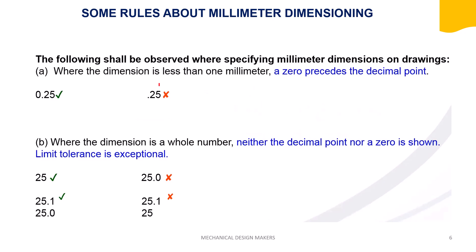The first rule: when the dimension is less than one millimeter, a zero must be placed before the decimal point. You cannot omit it — that is the wrong way. With the leading zero is the right way.